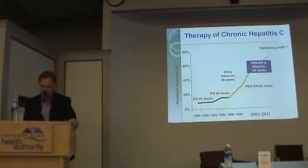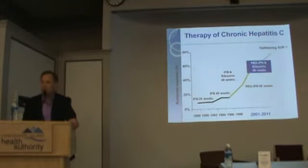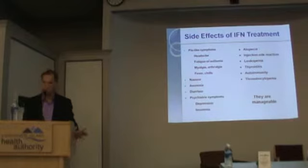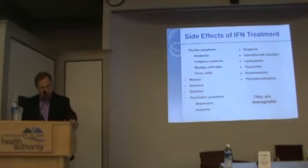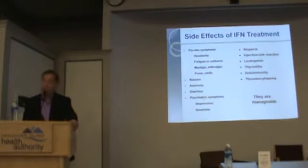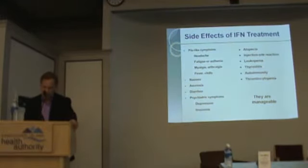The regimen was pegylated interferon plus ribavirin for 48 weeks for genotype 1, with a success rate of about 50 to 60%. The side effects of interferon include flu-like symptoms, anorexia, some people lose weight. Psychiatric side effects include fatigue, irritability, and depression — but they are all manageable with help.